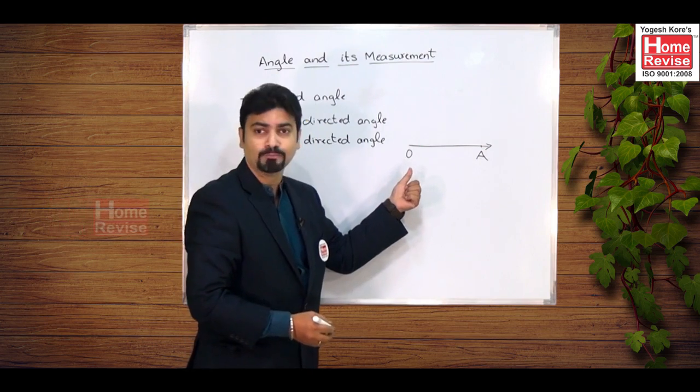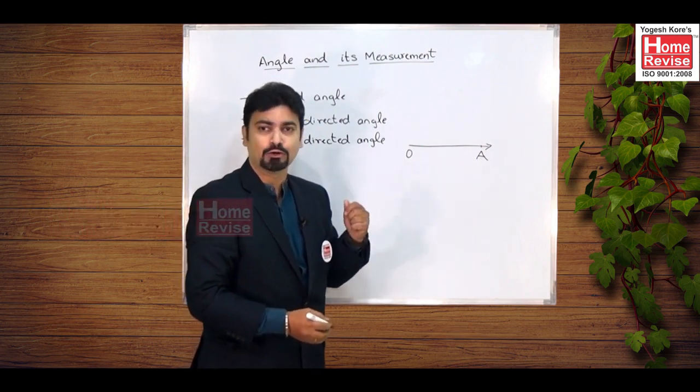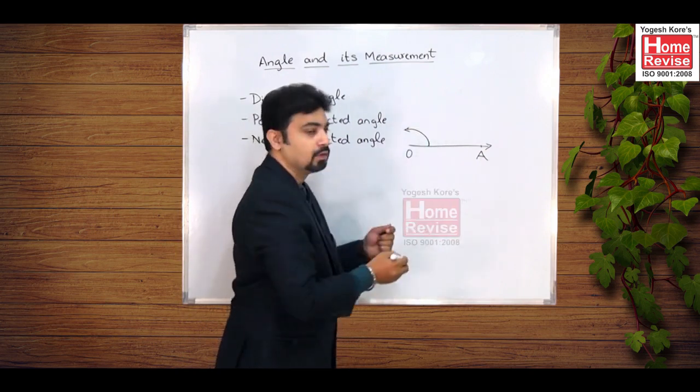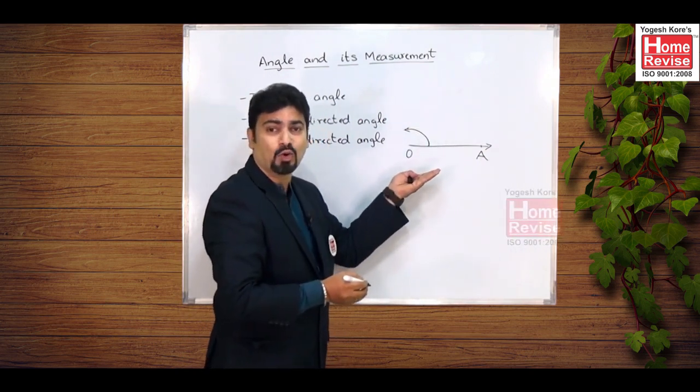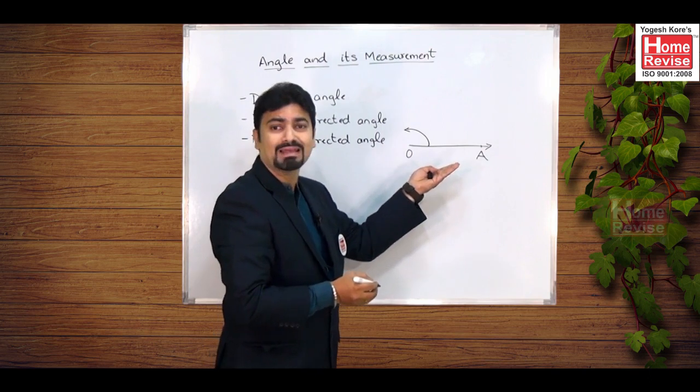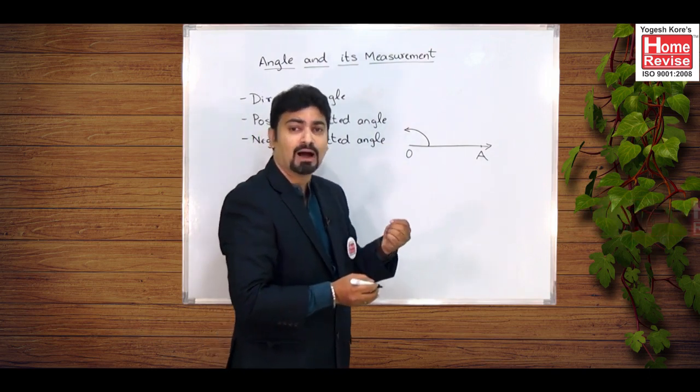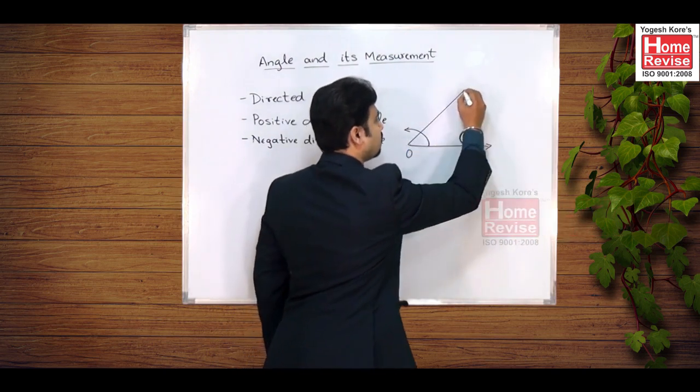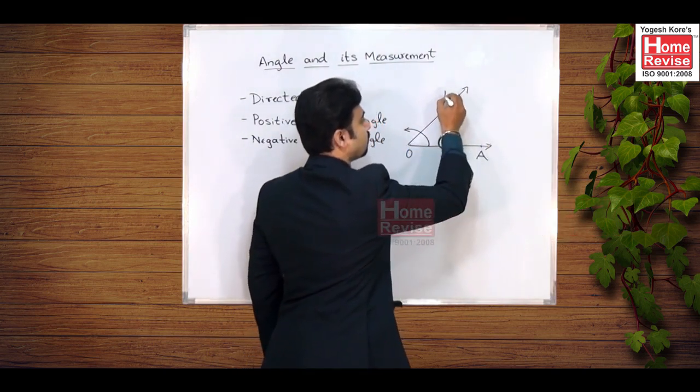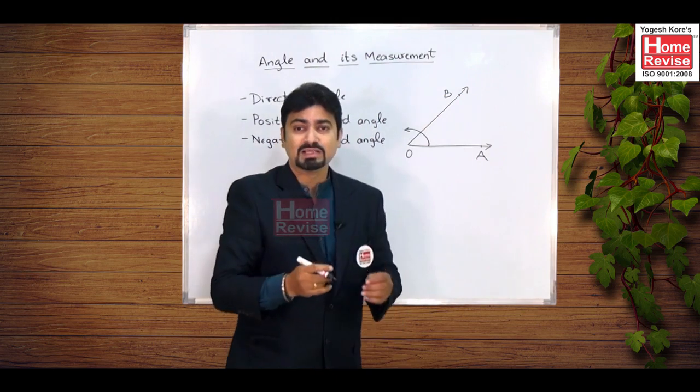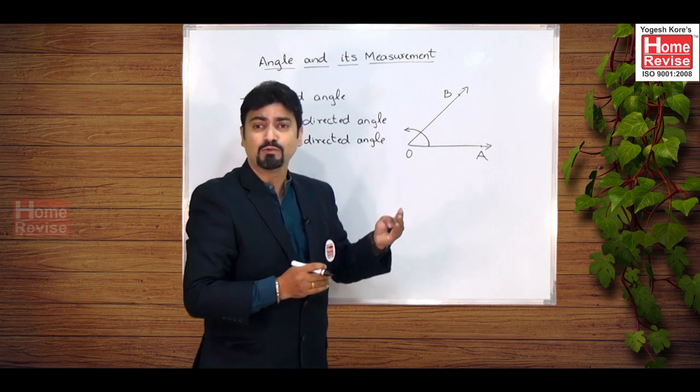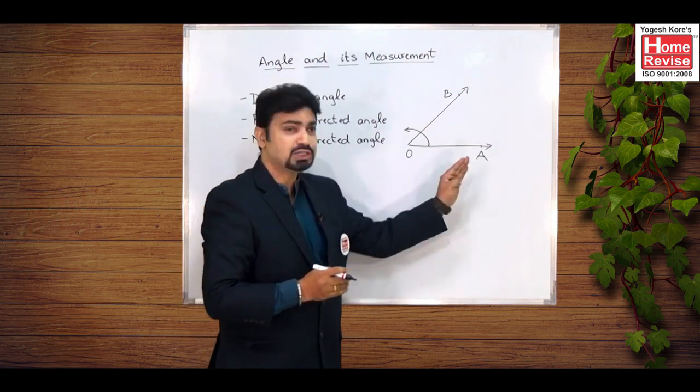So I rotate the ray OA about the point O in anticlockwise direction until it reaches the final position, that is ray OB. So I have got an angle AOB which is formed by rotating the initial arm OA about the point O till it reaches the final position, that is ray OB.